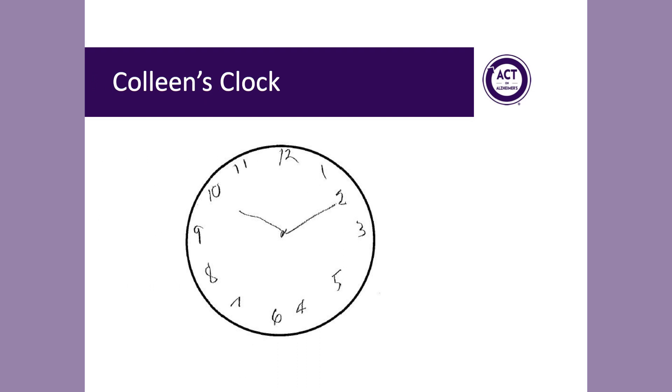In evaluating Colleen's clock, you'll notice two things. First, the number 4 and 5 have been transposed. Secondly, when setting the hands to the clock, one of the hands points to the 10 and one to the 2. Because of these errors, her clock would be given 0 points.